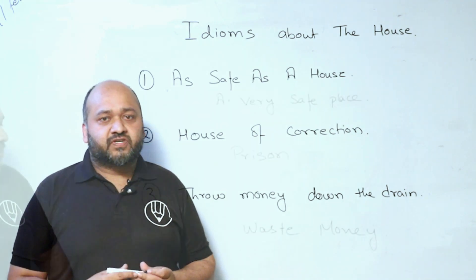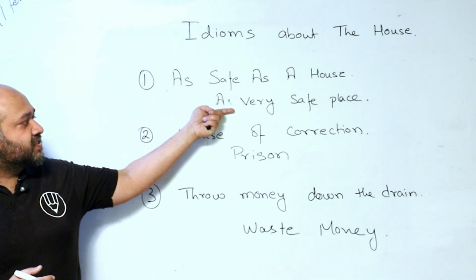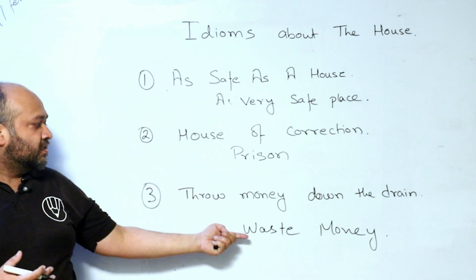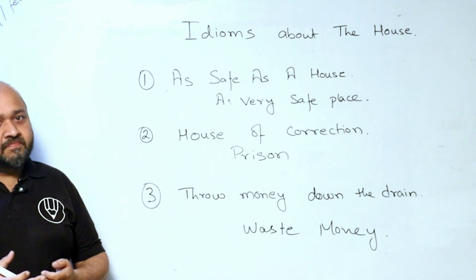Let's write their meanings. First, as safe as a house means a very safe place. House of corrections is prison. And to throw money down the drain is waste money. Let's move further.